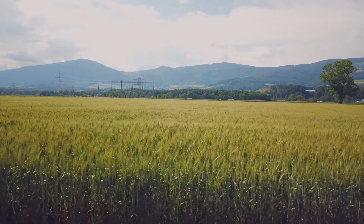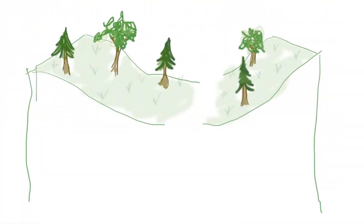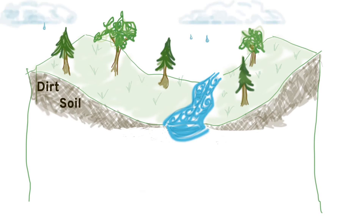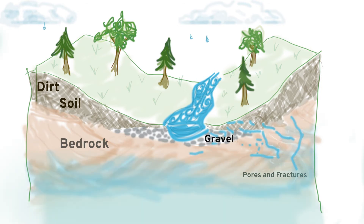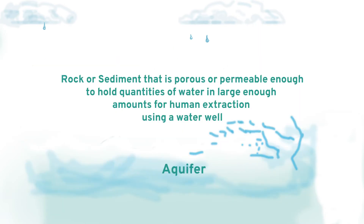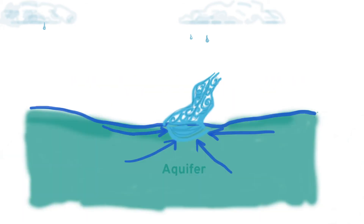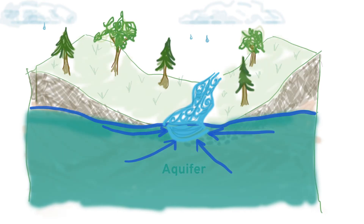Let's recap some of what we have learned about groundwater. When we look around outside, we see the surface of the earth. Below the soil is rock — bedrock — part of the upper portion of the earth's crust. Dirt, bedrock, and other materials such as sand and gravel have spaces, porous cracks and fractures for water to move through and be stored within. These porous rock, sand, and gravel formations that hold water are called aquifers — rock or sediment that is porous or permeable enough to hold quantities of water in large enough amounts for human extraction using a water well. Aquifers, or groundwater, often interact with their surroundings by adding or receiving water.